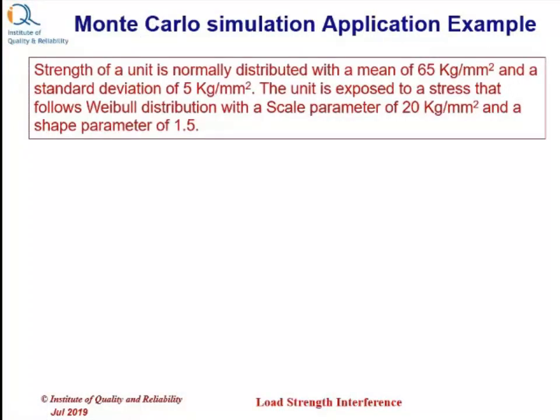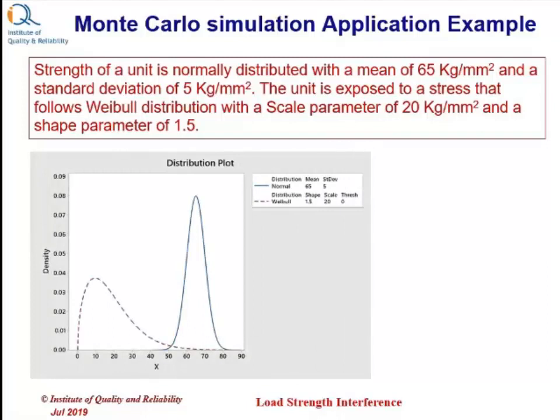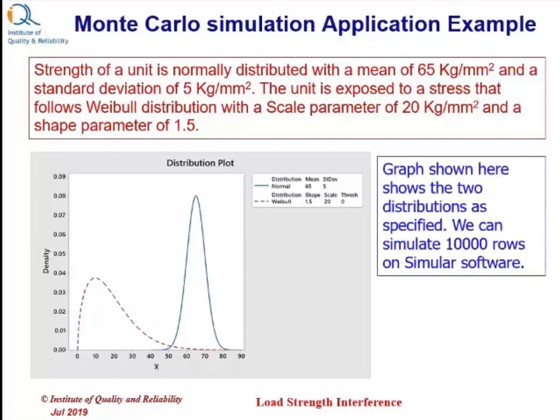Now let us consider an application example using Monte Carlo simulation. The strength of a unit is normally distributed with a mean of 65 kg per millimeter square and a standard deviation of 5 kg per millimeter square. The unit is exposed to a stress value that follows Weibull distribution with a scale parameter of 20 kg per mm square and a shape parameter of 1.5. The graph shown here is generated on Minitab for these two distributions. We will now use Simular software to perform the Monte Carlo simulation.